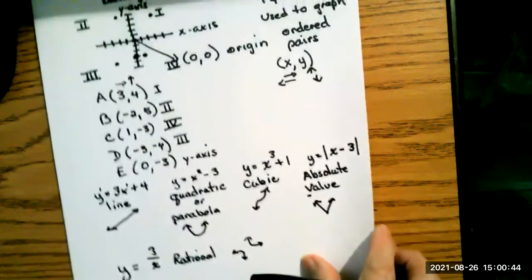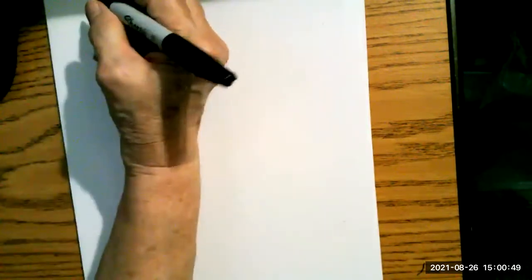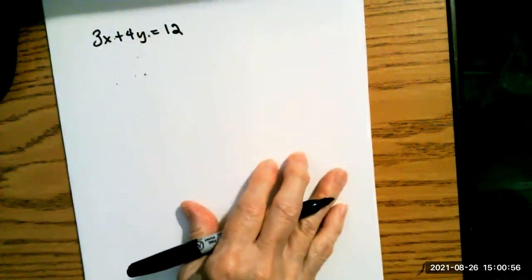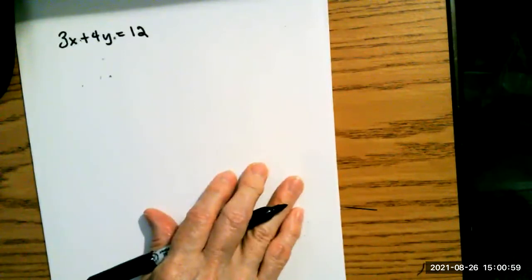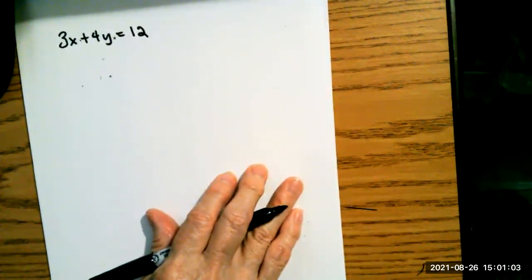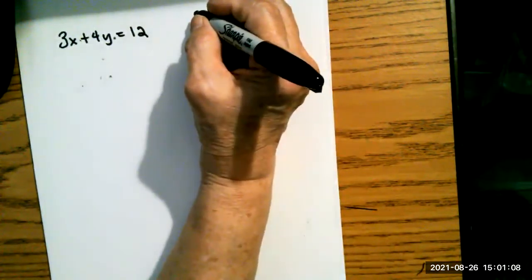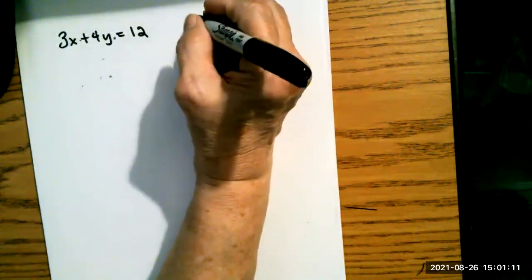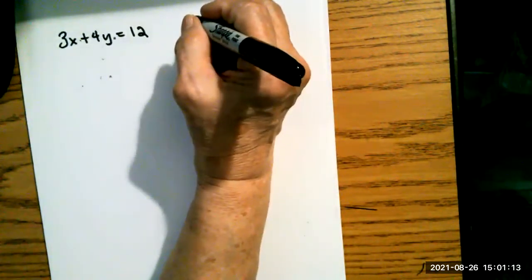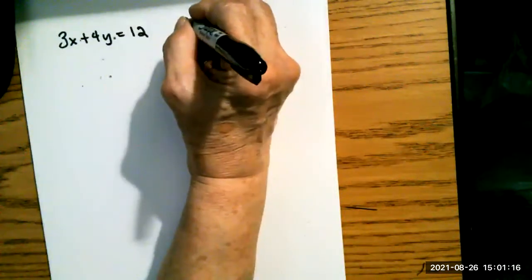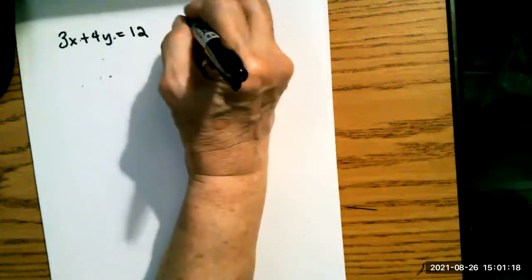All right. Now, some of the things that you're going to be doing for homework will require you to graph these by plotting points. So if you have 3x plus 4y equals 12, you don't even have to put this in y equals form. Most of the time we do so we can check it on our calculator, but I want to show you how to solve this first for y.